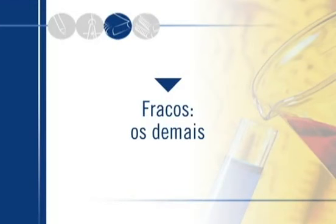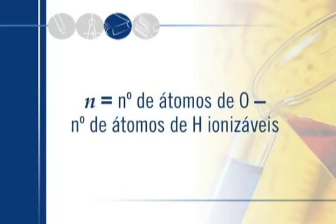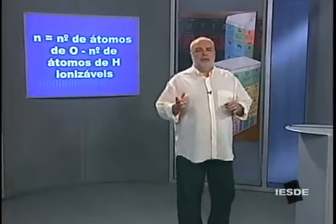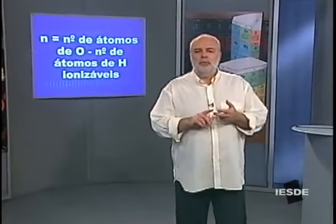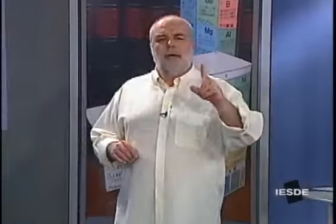Nos oxiácidos, a situação é bastante diferente. Vamos definir um número N, que é o número de átomos de oxigênio menos o número de átomos de hidrogênio ionizáveis. Esse N pode ser 0, 1, 2 ou 3. Muito fortes são aqueles ácidos que têm N igual a 3. Na prática, um único ácido é assim: HClO₄, ácido perclórico, simplesmente o ácido mais forte da química.